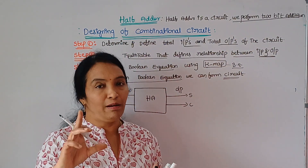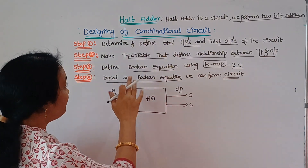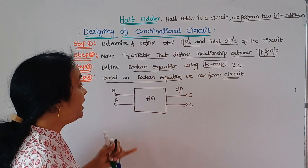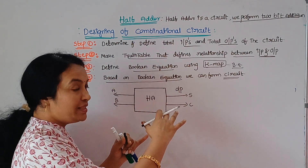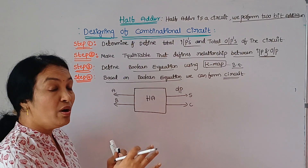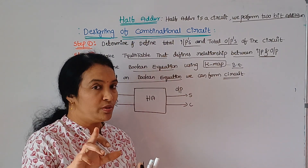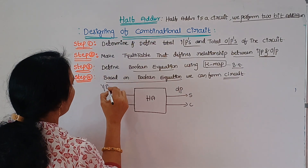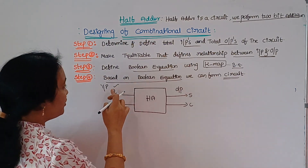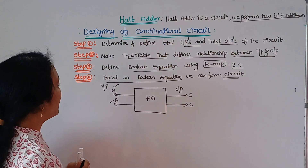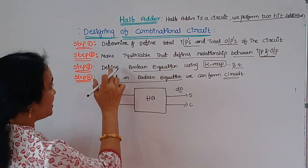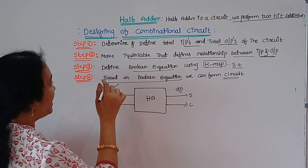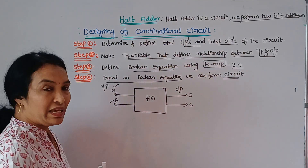I will tell you the four steps to follow. First, the inputs and outputs are identified to originate the circuit. Here I have two inputs, A and B. The first step is to identify the inputs and outputs.